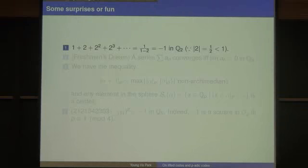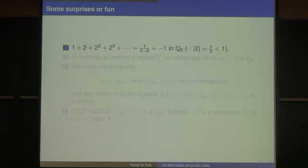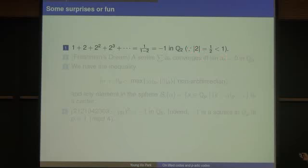Here is a fun example: if you add 1 plus 2 plus 2-squared plus 2-cubed to infinity, and use the formula for a geometric series, 1 over (1 minus 2) equals minus 1. This converges only in Q_2, because the 2-adic absolute value of 2 is one-half, which is less than 1.